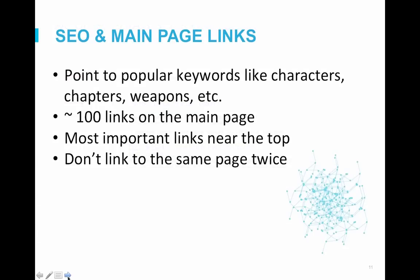So how can you improve your main page's SEO? The main area to consider is the links on your main page. We highly recommend linking to your most important keywords such as characters, episodes, seasons, or whatever are the most popular words associated with your topic. Shoot to have about 100 links on your main page with the most important links towards the top of the page. Search bots start at the top of the page, so whatever is there will be indexed first.